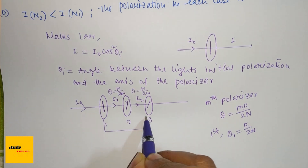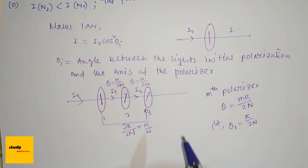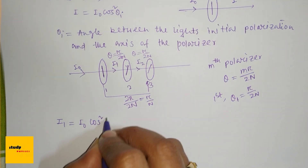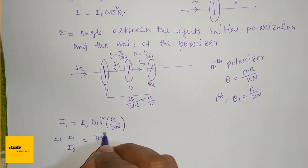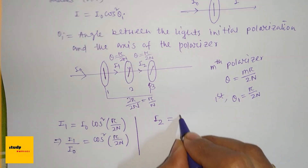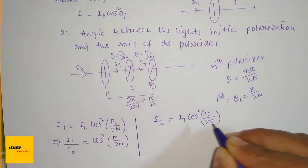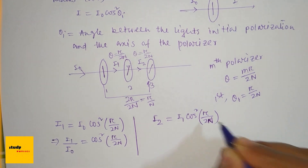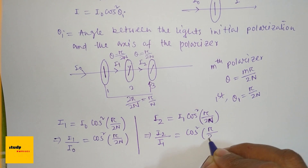But for polarizers 1 and 3, the angle between them is 2π/2n, which means π/n. So we can write I1 = I₀ cos²(π/2n), meaning I1/I₀ = cos²(π/2n). Similarly, I2 = I1 · cos²(π/2n), because adjacent polarizers make an angle π/2n, so I2/I1 = cos²(π/2n).